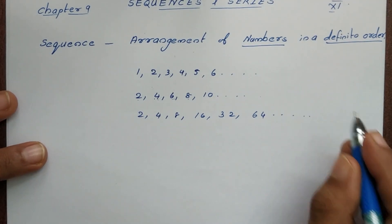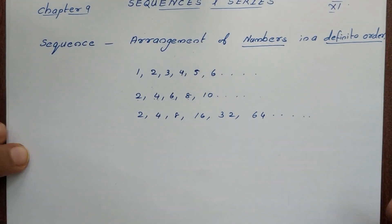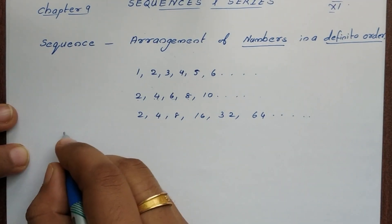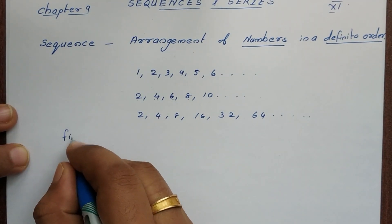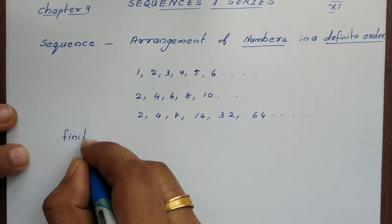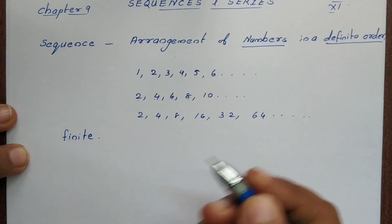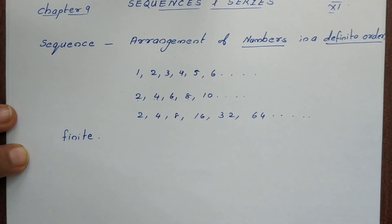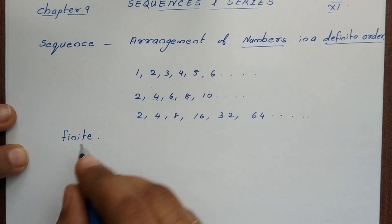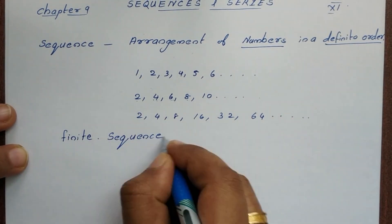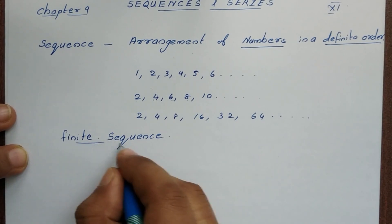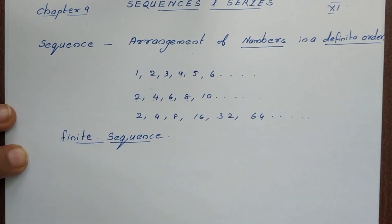We have two types of sequences. One is the finite sequence, and the other is the infinite sequence.